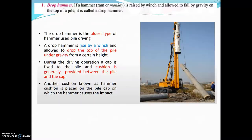The first one is drop hammer. If a hammer, ram or monkey is raised by winch and allowed to fall by gravity on the top of the pile, it is called a drop hammer. The hammer is lifted by a winch and from that height it falls by gravity on the top of the pile.